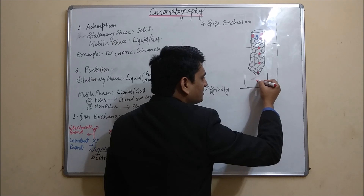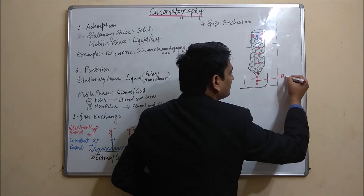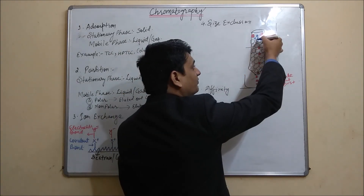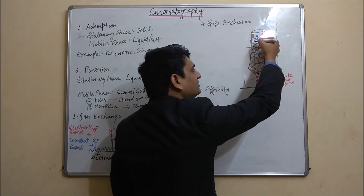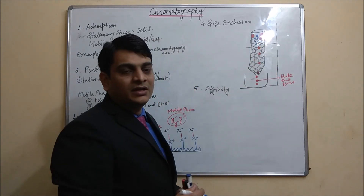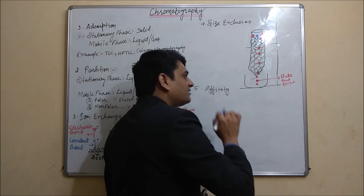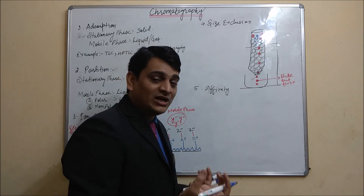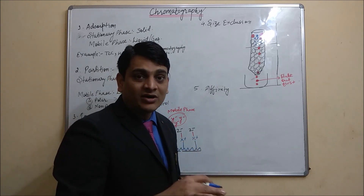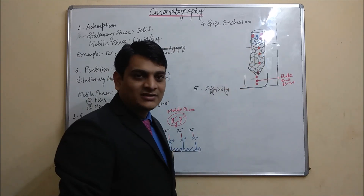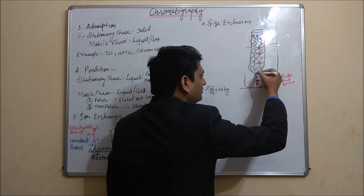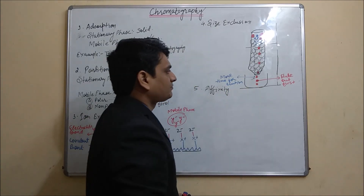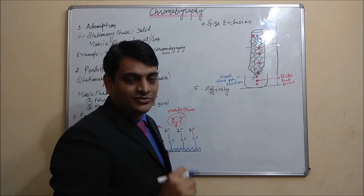The higher molecular weight compounds elute out first. The lower molecular weight compounds, when passing through the stationary phase, get entrapped by the intramolecular spaces (pores) within the gel matrix. These small pores interrupt the movement of small molecular weight particles, so they take more time for elution. This is the basic principle behind size exclusion chromatography.